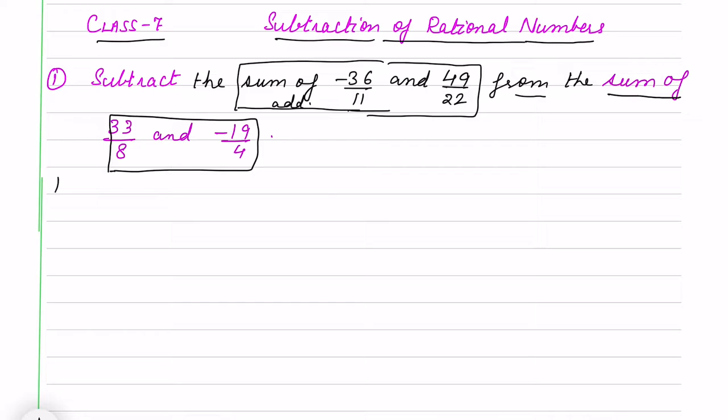Step one is I have to find the sum of minus 36 by 11 and 49 by 22. So I have to add it, 49 by 22. I will take LCM of denominator that is 11 and 22, that will be 11 times 1 is 11, times 2. So LCM will be 22.